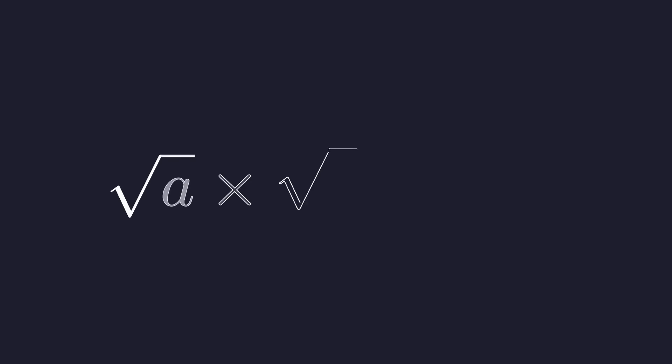First, let's look at the method that seems correct, but is actually flawed. We all learn the product rule for square roots, which states that the square root of a times the square root of b equals the square root of a times b, so the temptation is to apply this rule directly to our problem.